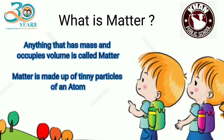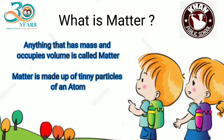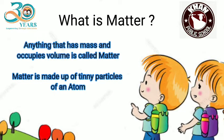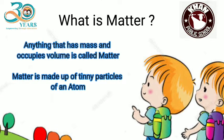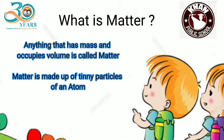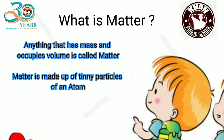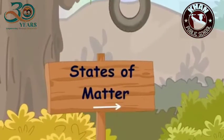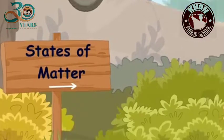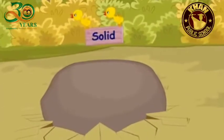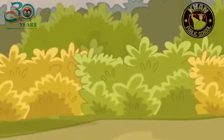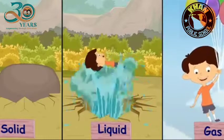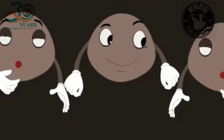Matter kis say kehte hain? Jo cheez jagah ghhere aur wazan rakhye usse hum matter kehte hain. Ab matter kis se milkar banta hai? Matter atom ke chote chote zaron se milkar banta hai. Matter exists in three states: solid, liquid, and gas.